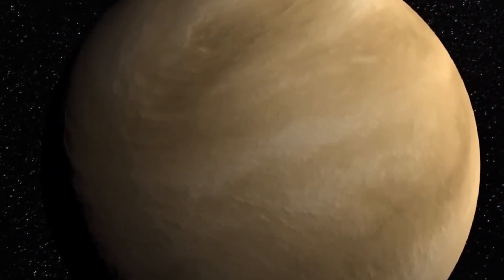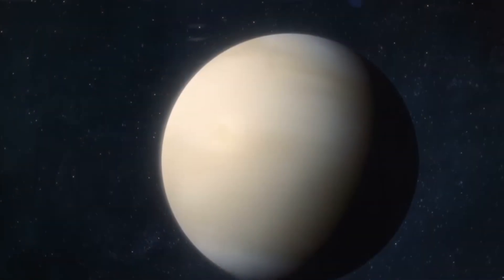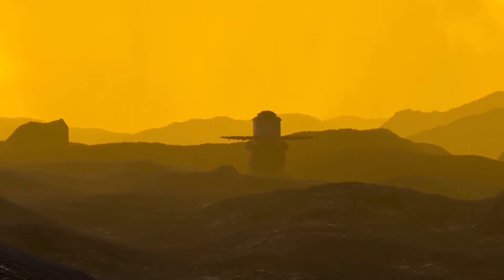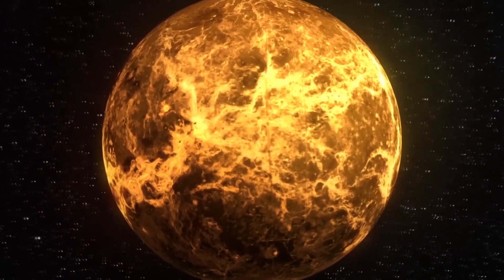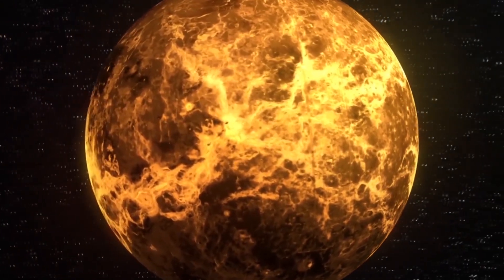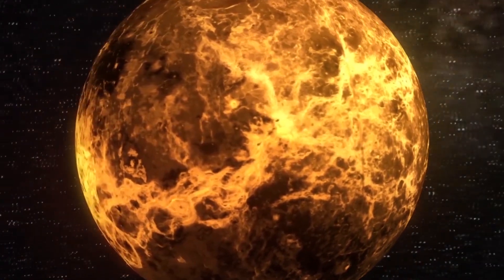Venus is hot. Despite Mercury being the closest planet to the Sun, Venus is the hottest planet in our solar system, with surface temperatures capable of melting lead due to its thick atmosphere and greenhouse effect.